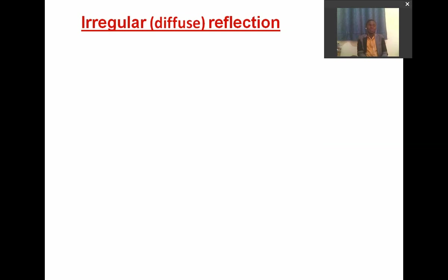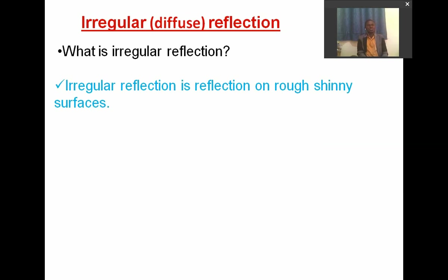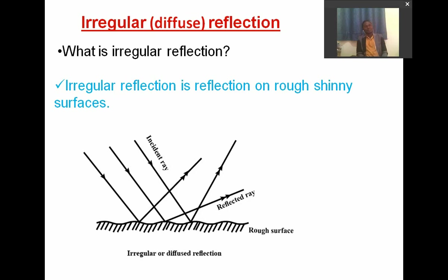Now let's look at irregular reflection, also called diffuse reflection. Irregular reflection is reflection on rough, shiny surfaces. In the picture, you can see the surface is rough — not smooth — because of the bendings in it. When light rays come and hit onto this rough surface, they are reflected in a disorganized manner. The light rays reflected off are scattered. That's why this type of reflection is referred to as irregular or diffuse reflection.